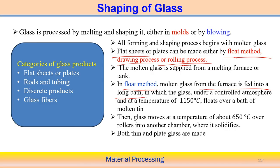The molten glass is supplied from the melting furnace or tank. In the float method, the molten glass from the furnace is fed into a long bath. Under a controlled atmosphere and a temperature of 1150 degrees centigrade, the glass floats over a bath of molten tin.